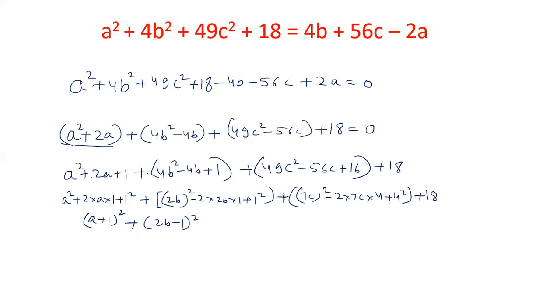So in this term, we have added 1 and 1 and 16, so we have to subtract 1 and 1 and 16. So that is 18. This term is also converted to perfect square: (a + 1)² + (2b - 1)² + (7c - 4)². And 18 and 18 cancelled out, so that will give you 0.